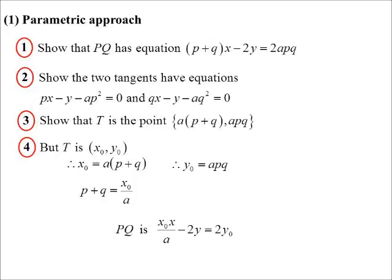All right. So the equation of PQ, remember, it was P plus Q X. Well, for P plus Q, I can put in X0/A. Minus 2Y is 2APQ. Ah, but we just said APQ is Y0. And now there are no parameters in the answer. Remember, we didn't know what the parameters were. We didn't know what P and Q was. What we knew was X0 and Y0. And so we've got the equation of the chord in terms of the numbers that we knew. X0 and Y0.